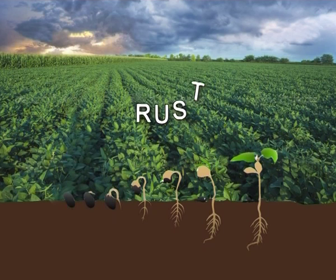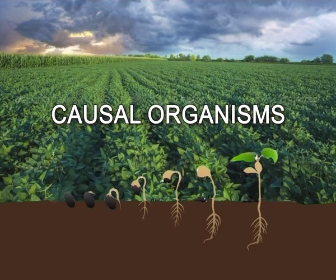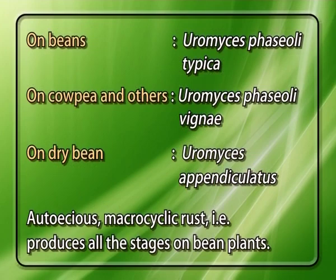The next disease is rust. There are several causal organisms depending on the bean type. On beans it is Uromyces phaseoli typica; on cowpea and others it is Uromyces phaseoli vignae; and on dry bean it is Uromyces appendiculatus. This is an autoecious and macrocyclic rust, meaning it produces all stages on bean plants.